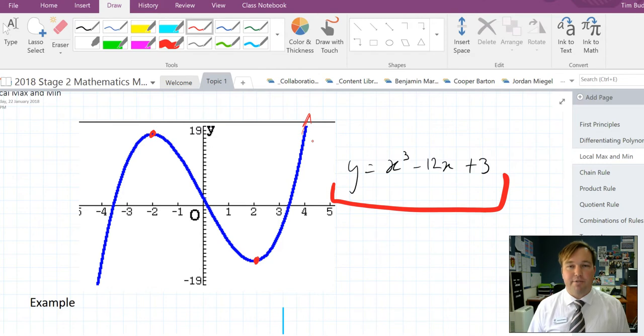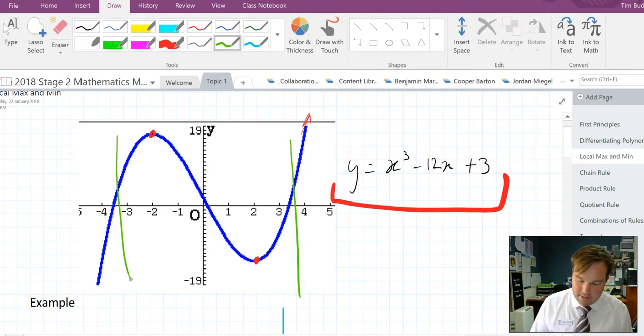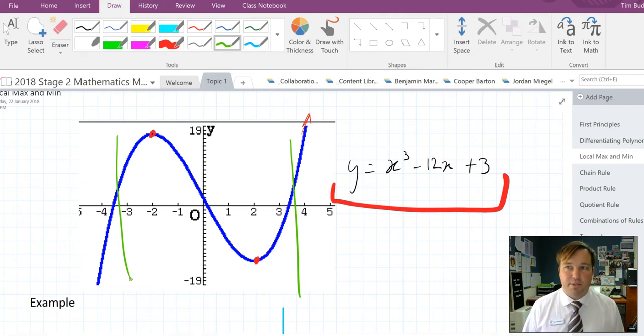So typically when you are asked to find local maximums and min, you are given a restricted domain. And if we restricted the domain to say here and here, then within those green lines, those red dots are the local maximums. And in previous years you will have looked at, for example, using your calculator to find these.